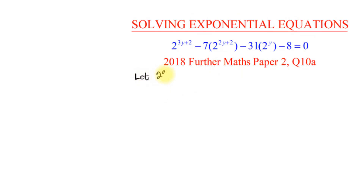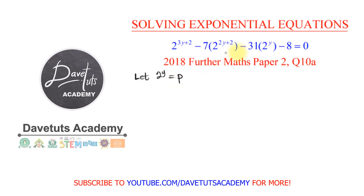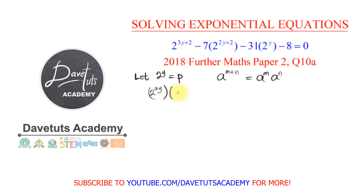Since we want 2^y to equal p, we look for all instances of 2^y in the equation. By the rules of indices, a^(m+n) equals a^m times a^n. So the first term, 2^(3y+2), becomes 2^(3y) multiplied by 2^2.